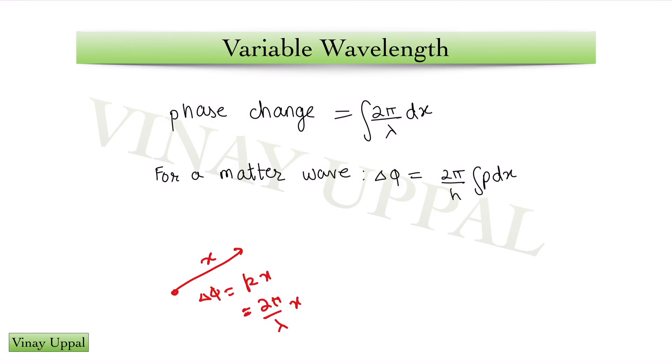However, what if the wavelength is variable? If the wavelength is variable, I can't write this anymore. I will have to write 2π/λ times dx and then integrate it because the wavelength is now a variable quantity.